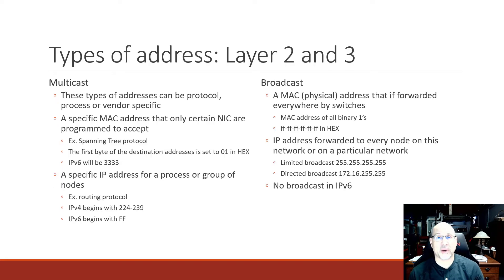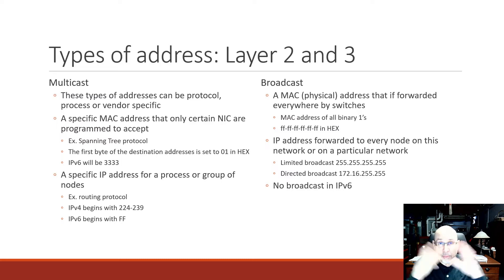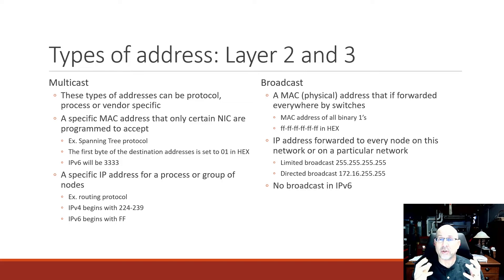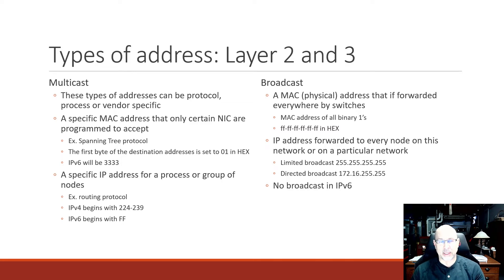So let's remind ourselves about the different kinds of addresses. First, multicast — this is for a group of nodes. Not just you, or not everybody, but a collection of nodes for whatever reason. It might be a protocol, it might be that you've done PIM and you've got a collection of nodes that are interested in a stream or a particular protocol. At Layer 2, we'll be talking about a particular MAC address, and a lot of protocols have a very particular multicast MAC address.